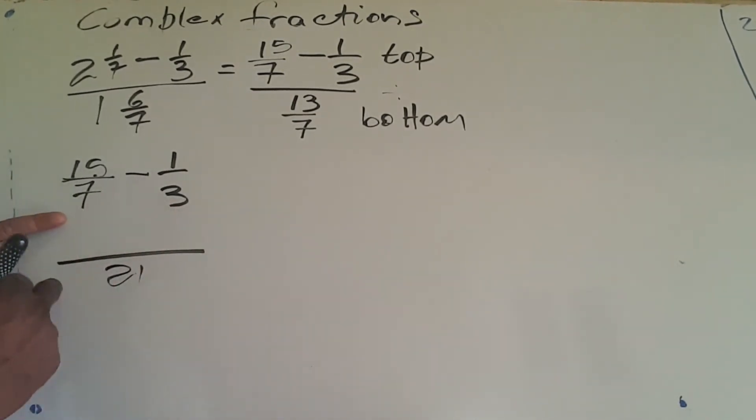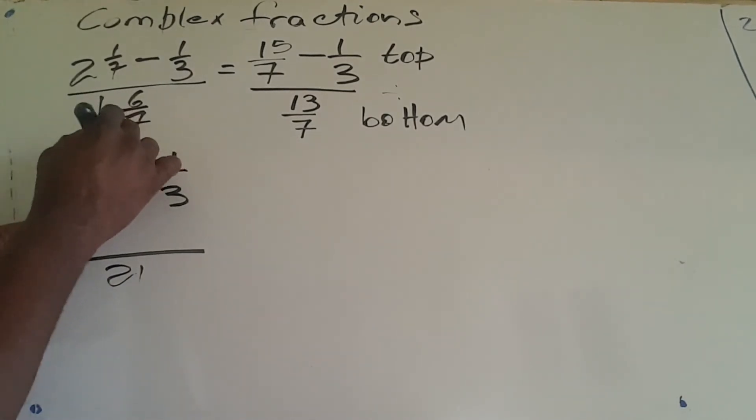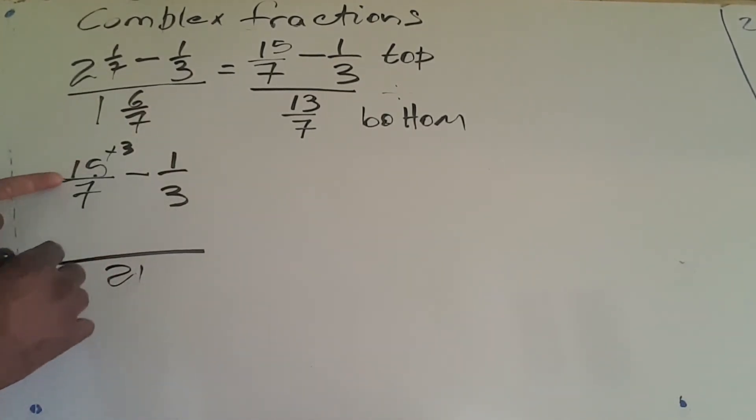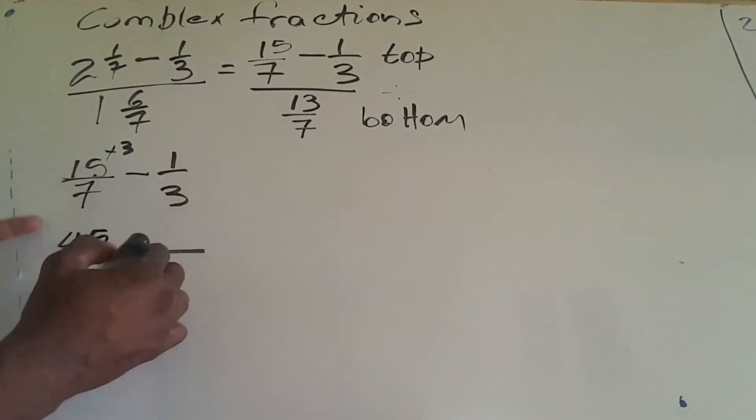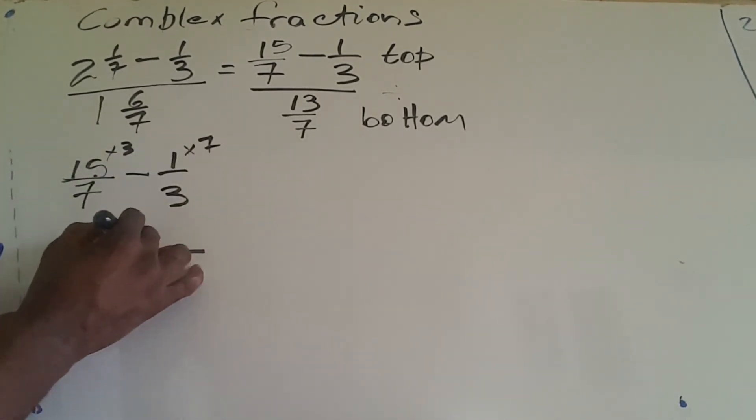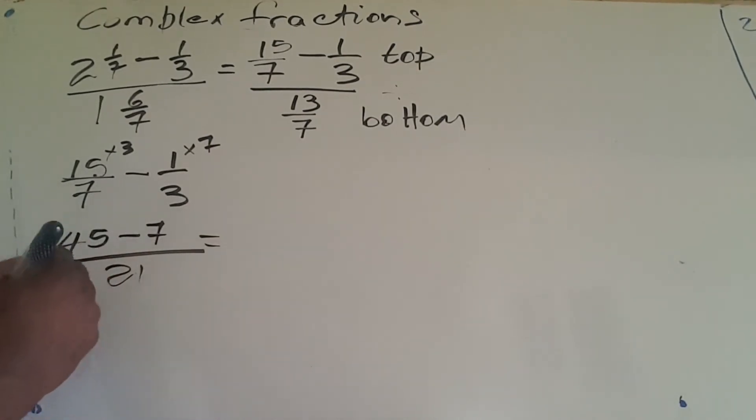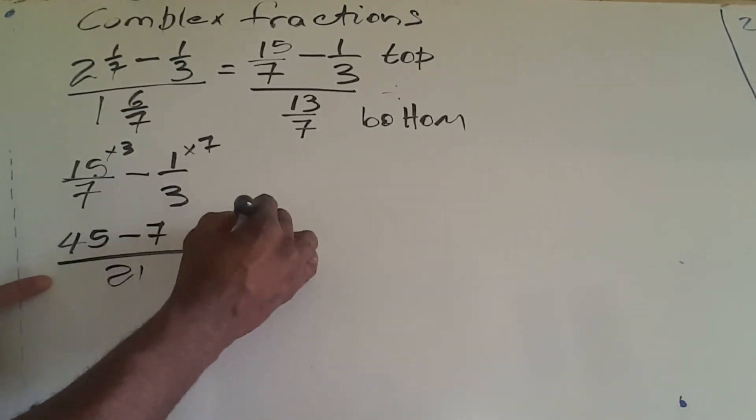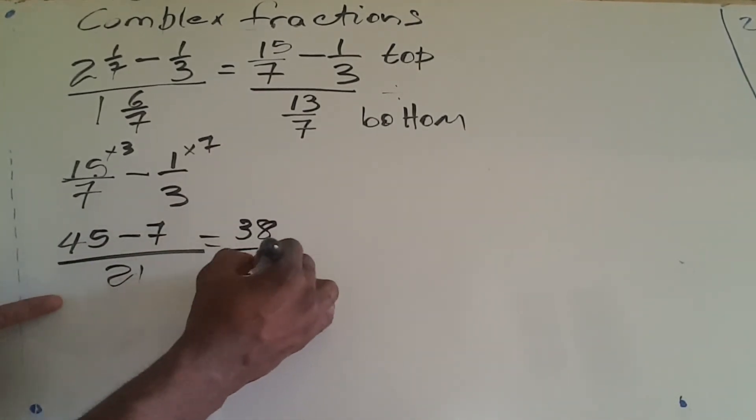7 and 3 go into 21. 7 into 21 is 3 times, 3 times 15 gives us 45. 3 into 21 is 7 times, 7 times 1 is 7. So 45 minus 7 is 38 over 21.